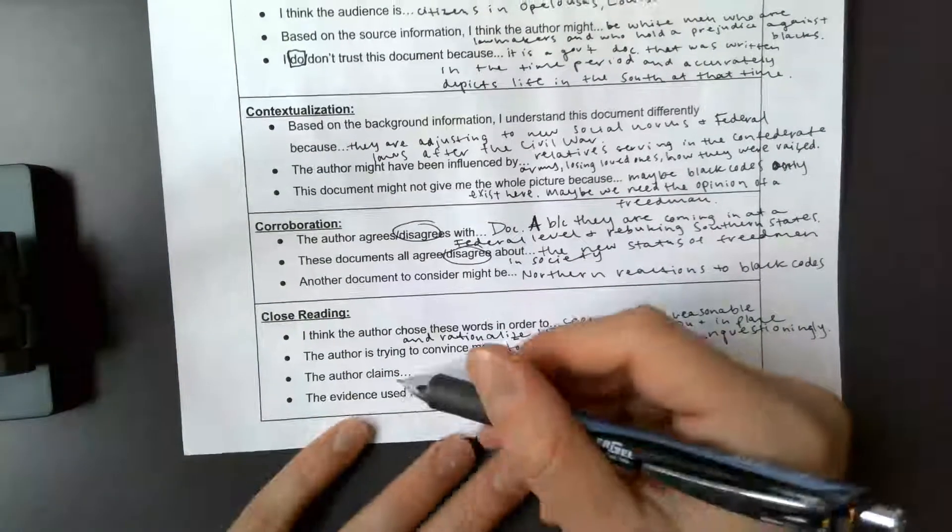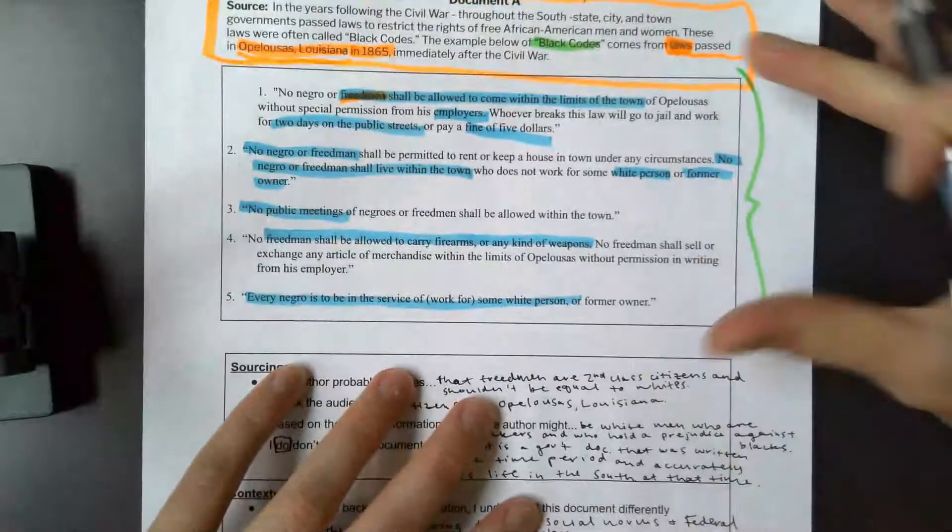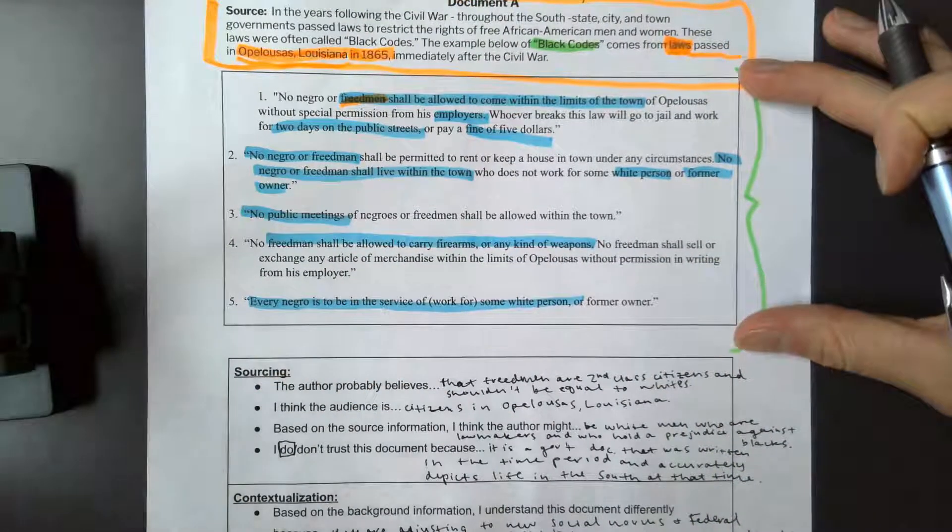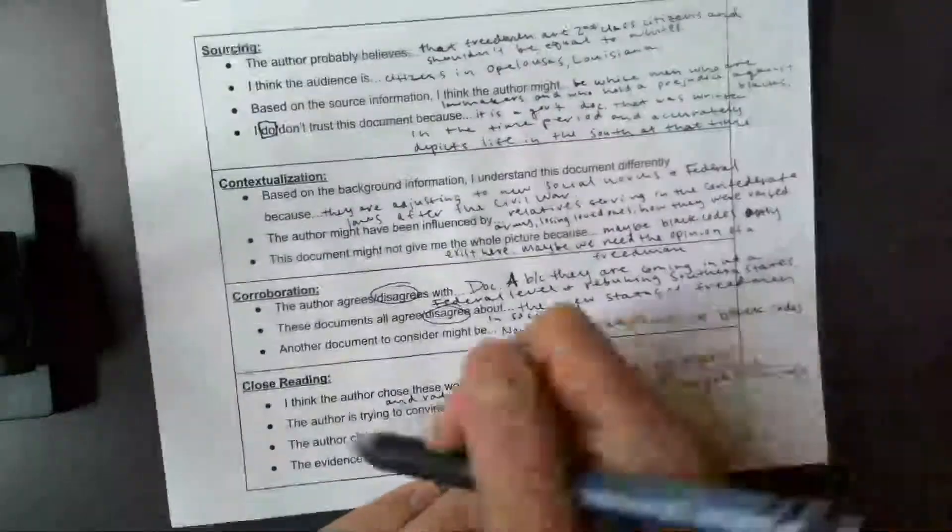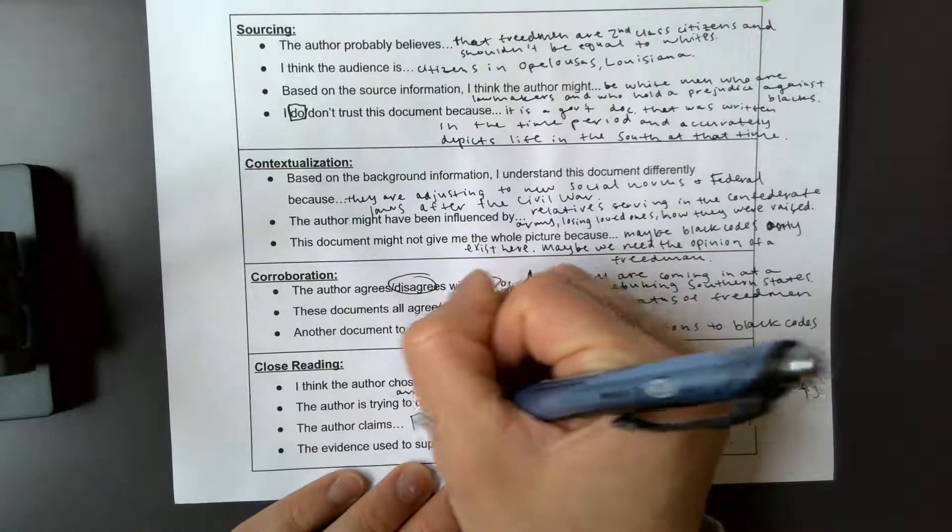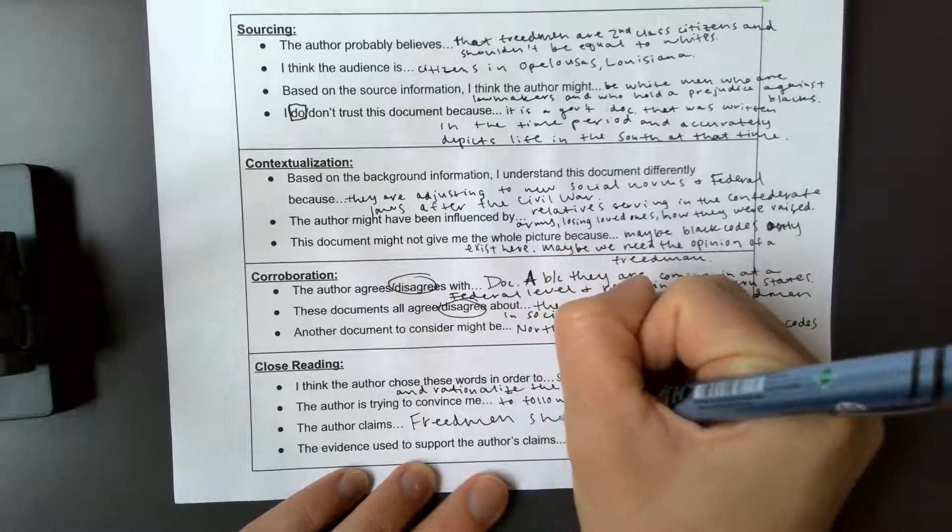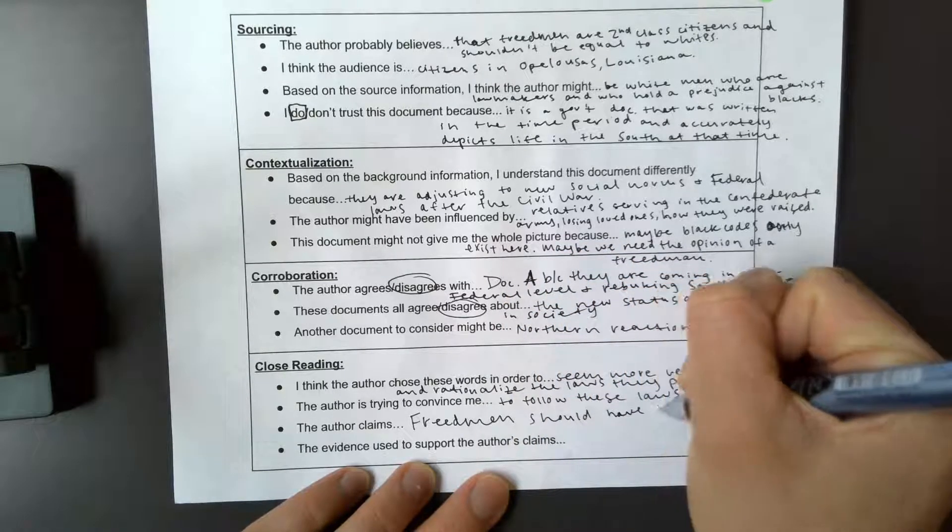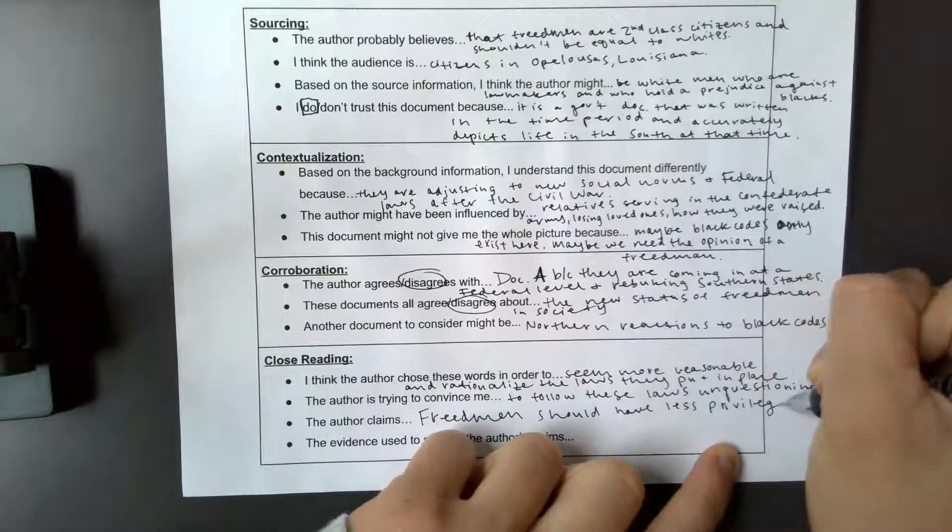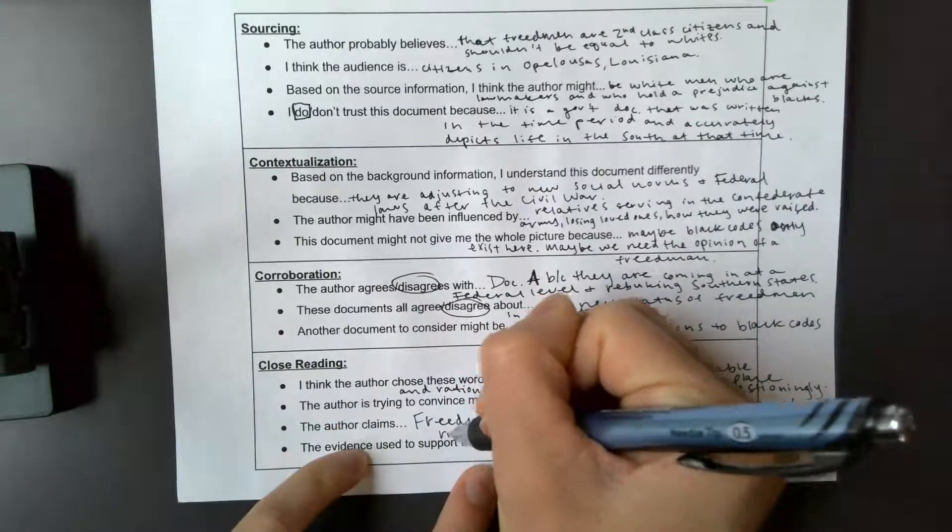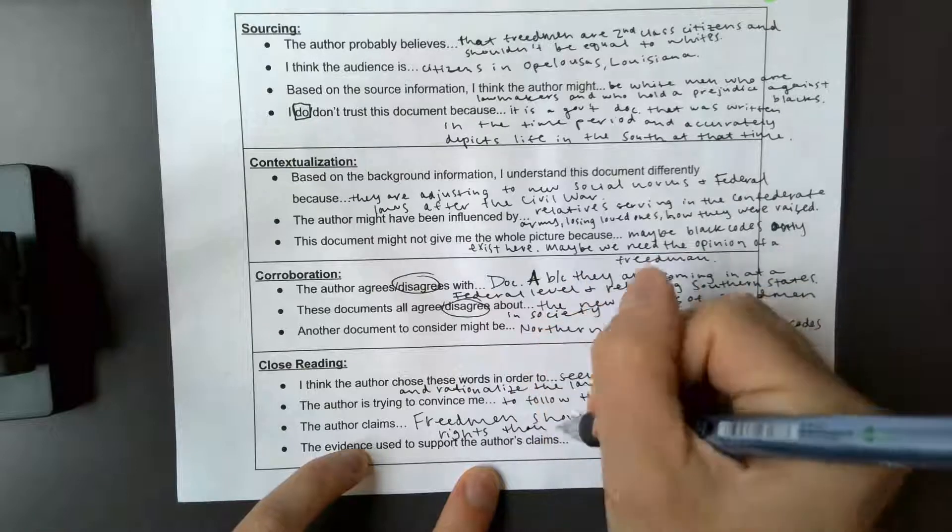And then three, the author claims. I'm gonna summarize, so there's four specific claims in here basically, but I'm gonna summarize and I'm gonna say the author claims freed men should have less privileges slash rights then white.